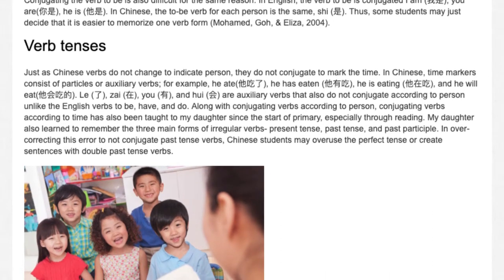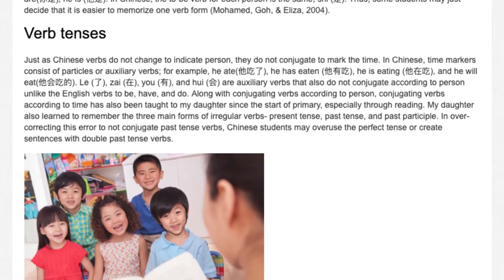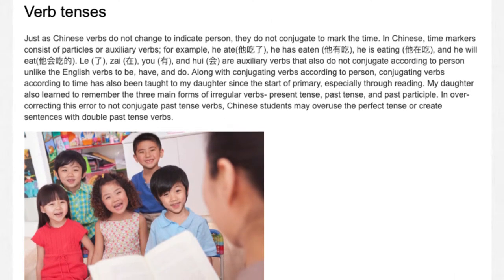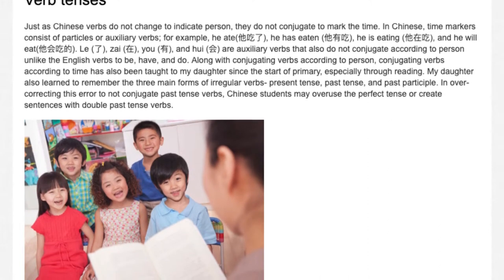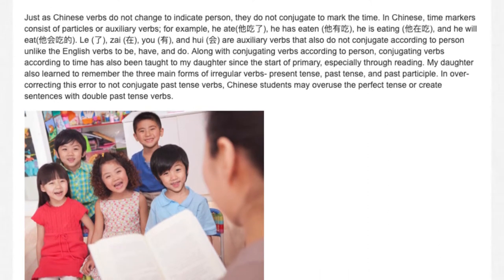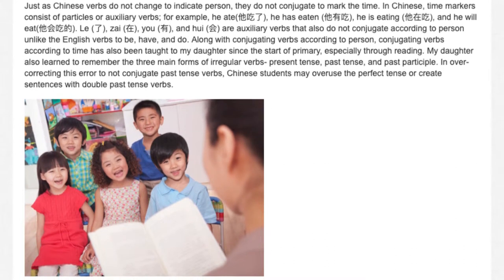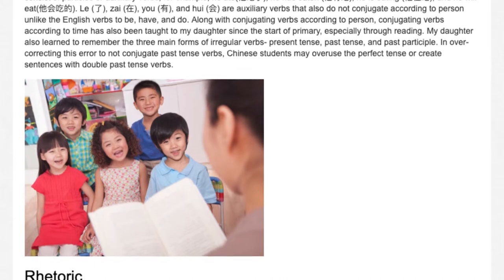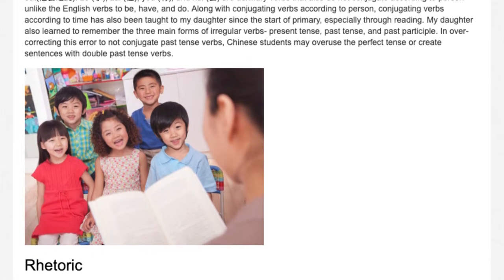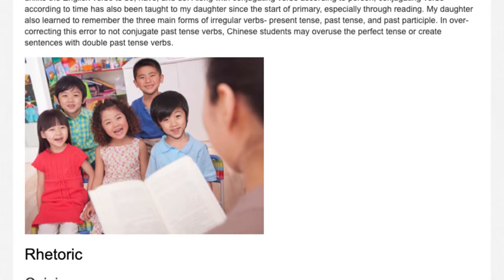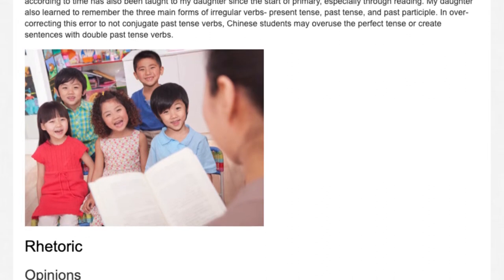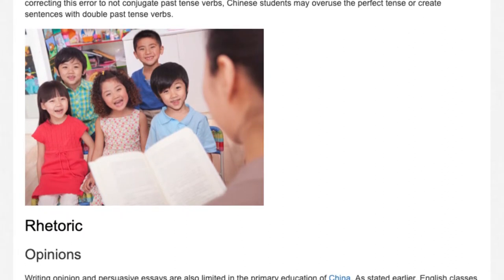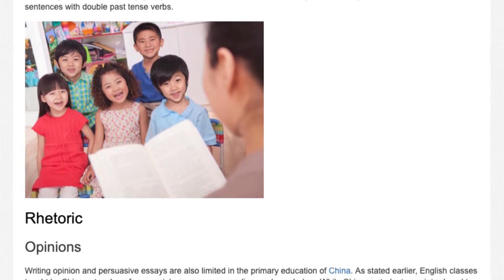Verb tenses. Just as Chinese verbs do not change to indicate person, they do not conjugate to mark time. In Chinese, time markers consist of particles or auxiliary verbs — for example, 'he ate', 'he has eaten', 'he is eating', and 'he will eat' use auxiliary particles that do not conjugate according to person, unlike the English verbs 'to be', 'have', and 'do'. Along with conjugating verbs according to person, conjugating verbs according to time has been taught to my daughter since the start of primary, especially through reading. My daughter also learned to remember the three main forms of irregular verbs: present tense, past tense, and past participle. In overcorrecting the error of not conjugating past tense verbs, Chinese students may overuse the perfect tense or create sentences with double past tense verbs.